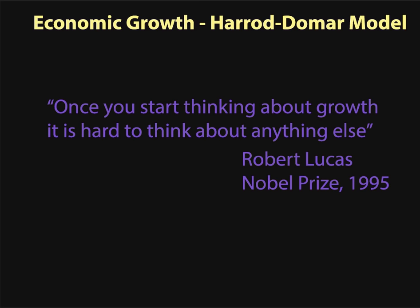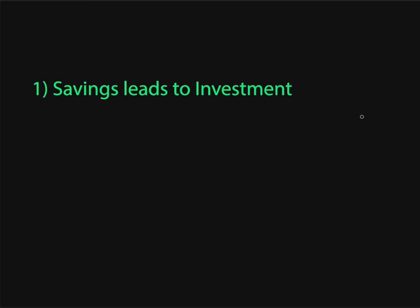The Harrod-Domar model wasn't originally created as an economic growth model, but has been used as such. We're going to walk through how that model came to be and some of its big assumptions. The first assumption is that savings leads to investment. When people save money, if banks have money saved then people can invest it, and if companies save money they can spend it on factories and things like that. So savings leads to investment, which we write as S equals I.